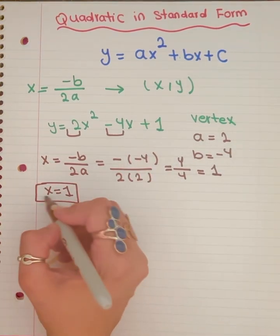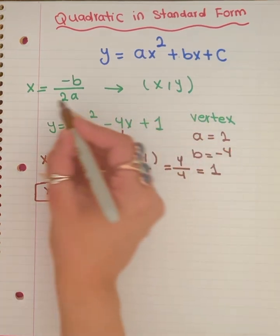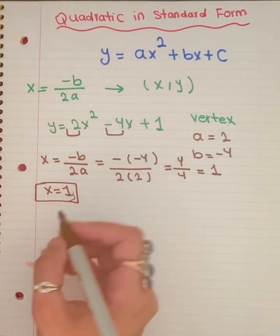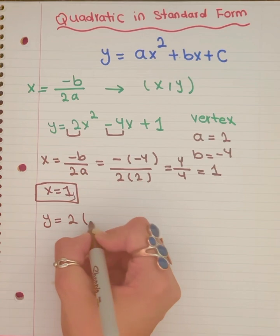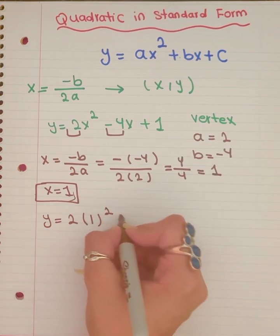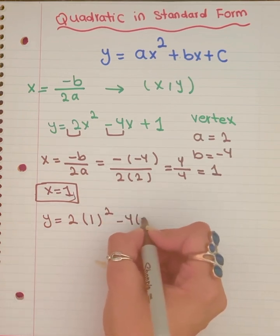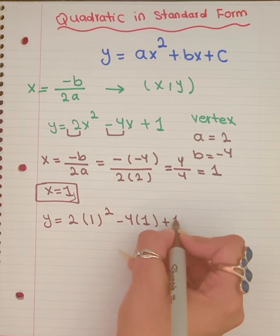Then you have to plug x equals 1 into the original format in order to find y. So y is going to equal 2. Instead of x, we're going to write down 1 to the power of 2 minus 4 times 1 plus 1.